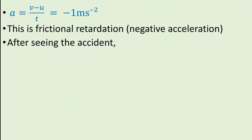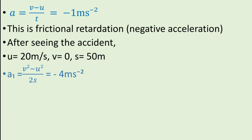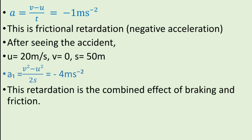After seeing the accident, U is equal to 20 meter per second, V is equal to 0 meter per second, and distance S is equal to 50 meter. Now, acceleration A1 is given by A1 is equal to V square minus U square upon twice S. After substituting the given values, we get A1 is equal to minus 4 meter per square second. This retardation is the combined effect of braking and friction.